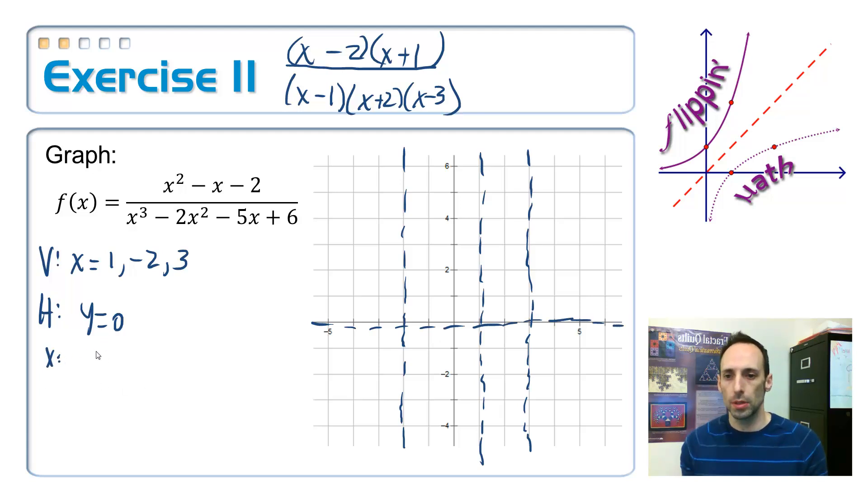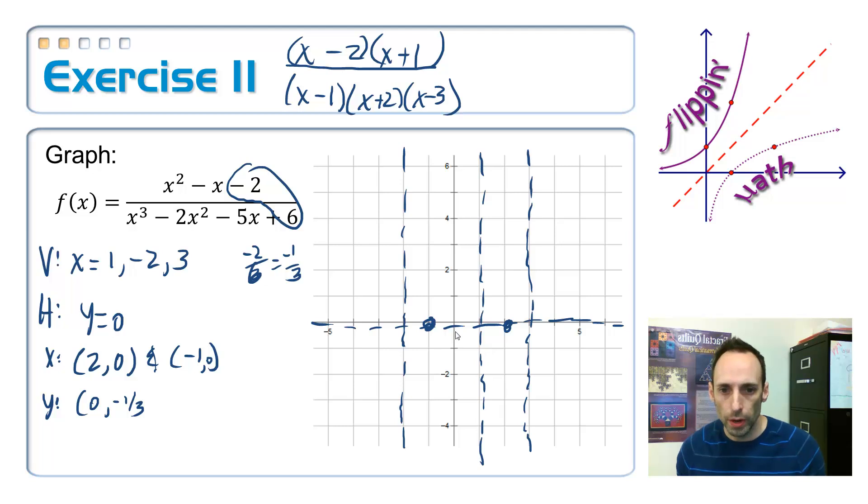Okay. x-intercept. Where's the top equal to 0? We've got two of those. We've got 2, 0, and negative 1, 0. 2, 0. Put a dot there. Negative 1, 0. Right there. Okay. And then, hopefully, we have ourselves a y-intercept ratio of these. That is negative 2 over 6. So, negative 1 third. So, 0, negative 1 third. Right down here.